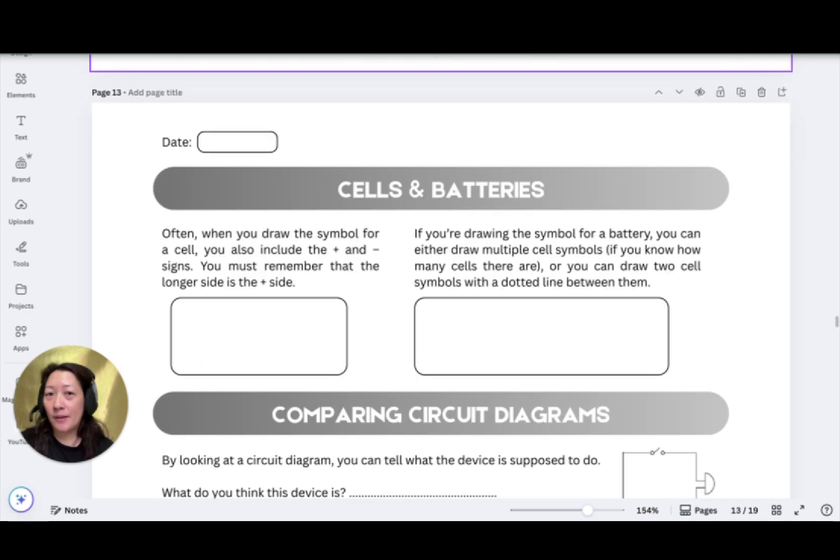So when it comes to drawing the symbols, you must be able to differentiate between the cell and battery. So a cell is made up of those parallel lines that we learned earlier with one longer than the other, like this. Now you must be clear about which side is the positive and negative terminal. The longer side is the positive terminal, while the negative terminal is the shorter side. Now it does say here that often when we draw the symbol for a cell, we can also include the positive and negative sides. Without the positive and negative symbols, you must still be able to identify which side is the positive terminal and the negative terminal. Always remember the longer side is a positive terminal.